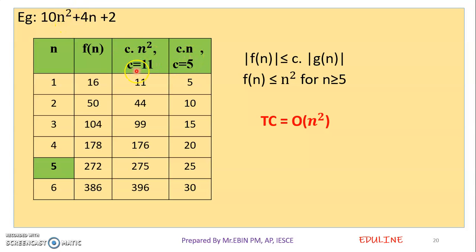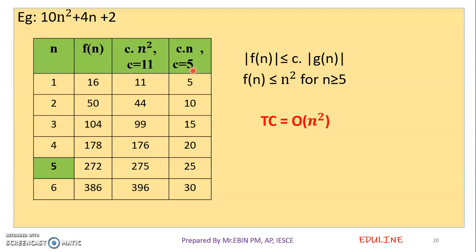If c into n squared, then c into n squared. C into n squared is n squared and a constant. So we have a function value. For n equals 1, the value of f of n is 10 into 1 squared plus 4 into 1 plus 2, which equals 16. We have a break-even point in the table.